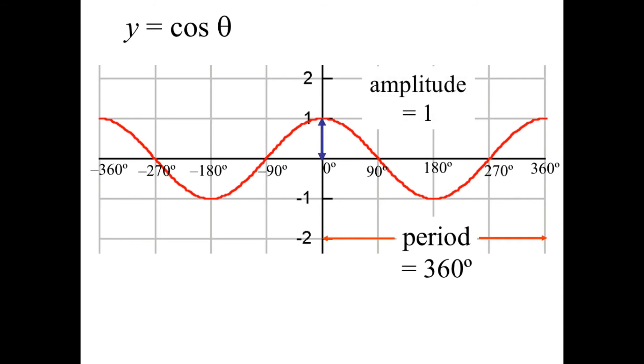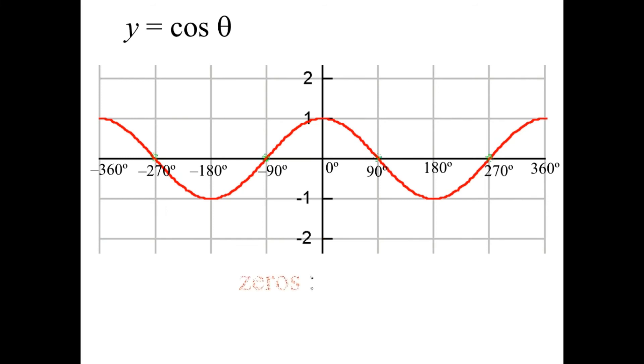It will have different zeros, however. The max of the curve is still 1. The min of the curve is still negative 1. But it will have different zeros. The zeros will be plus or minus 90, plus or minus 270, as we can see here.